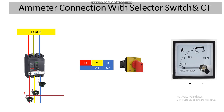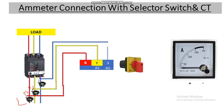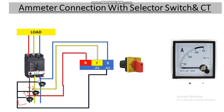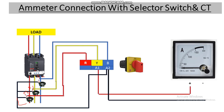Now let's do the wiring. Each CT has s1 and s2 secondary terminals. The s1 terminal of the R-phase CT connects to the R terminal of the selector switch; s1 of Y-phase CT connects to the Y terminal; and s1 of the B-phase CT connects to the B terminal. All three s2 terminals are joined together and connected to the a2 terminal of the selector switch. From the selector switch, the a1 terminal connects to the positive terminal of the ammeter, and the a2 terminal connects to the negative terminal of the ammeter. This completes the connection.